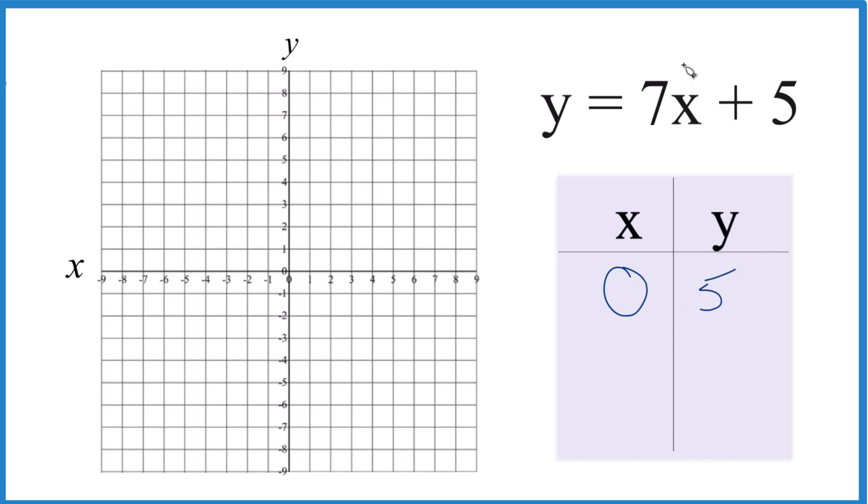We could put 1 in for x. So if we said x is 1 here, 7 times 1 is 7 plus 5, that's 12. But my graph doesn't go up to 12 here. So let's do this. Let's make it negative 1.